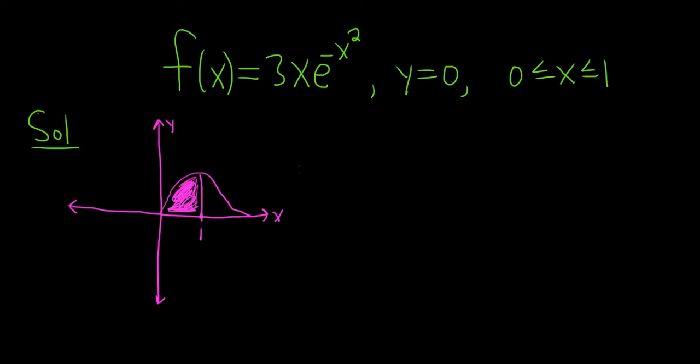So to do this by hand, we would do the following. The area would be the definite integral from 0 to 1 of this function minus this function, because y equals 0 is down here, it's this horizontal line. So it's top minus bottom, and if we draw a rectangle, that's what it would look like.